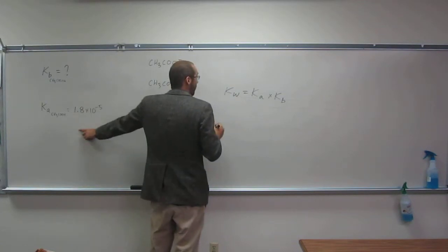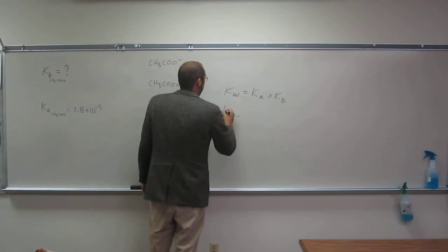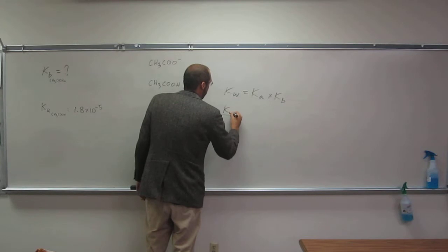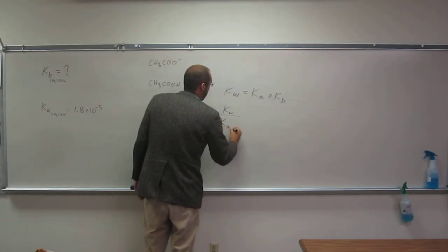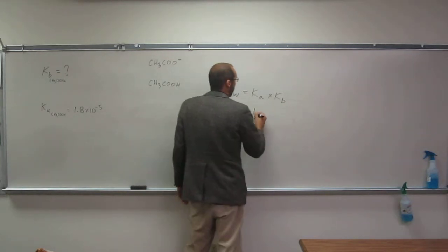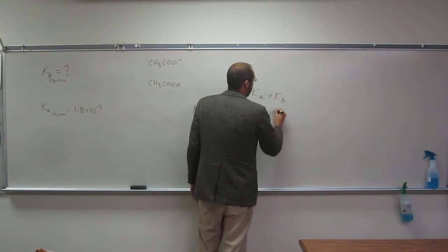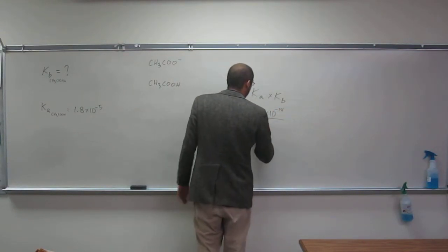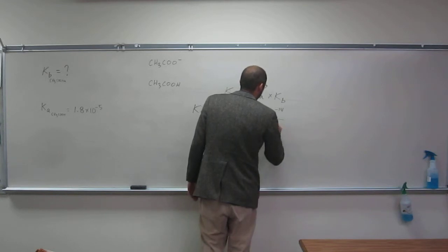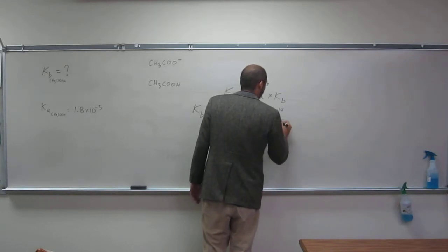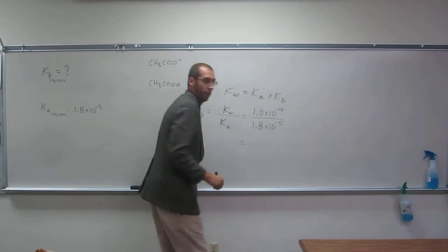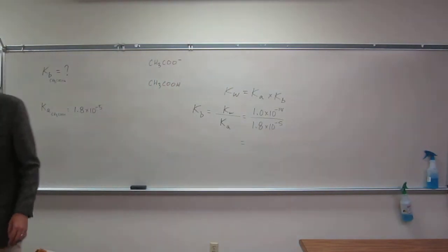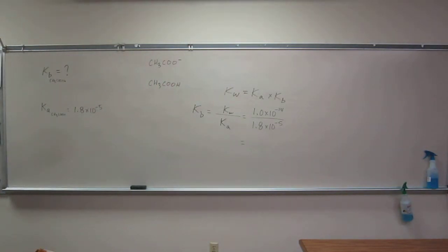So we've got Ka. So Kw, 1.0 times 10 to the negative 14 divided by Ka, 1.8 times 10 to the negative 5. And that should give you the KB of sodium acetate or the acetyl.